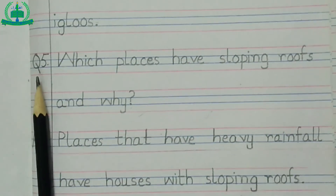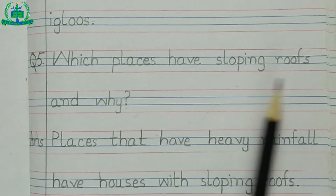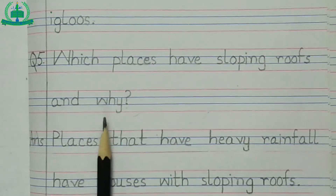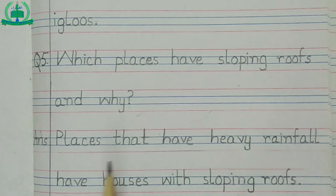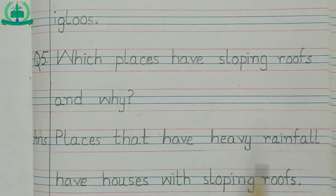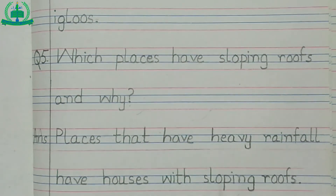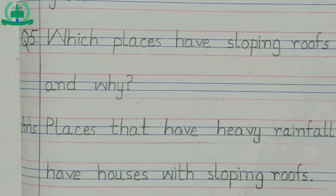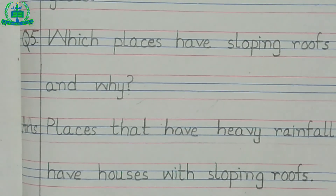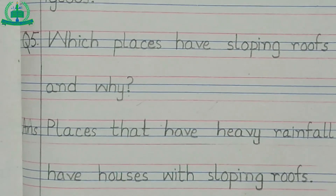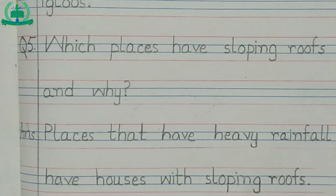Question number 5: which places have sloping roofs and why? Answer is, places that have heavy rainfall have houses with sloping roofs. This is the end of today's lecture. Complete your work on time and submit it on coming Thursday.